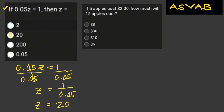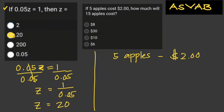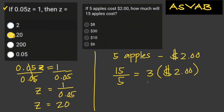The next problem: if five apples cost two dollars, how much will fifteen apples cost? For five apples it costs two dollars, and fifteen apples is three sets of five. So you divide 15 by 5 to get 3, then multiply by two dollars. The answer is six dollars.